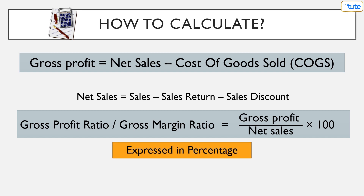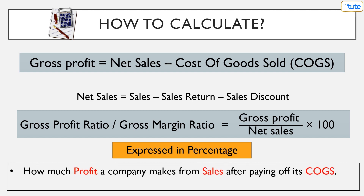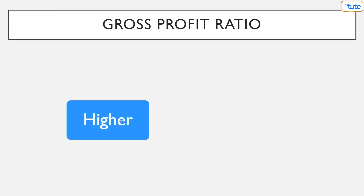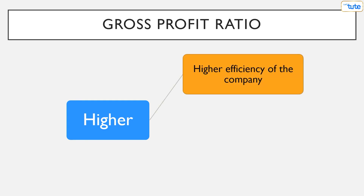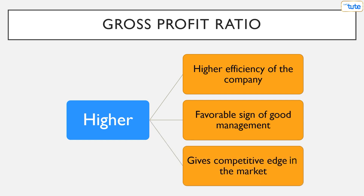The gross profit ratio, expressed as a percentage, indicates how much profit a company makes from its sales after paying off its cost of goods sold. This gross margin depends upon the relationship between sale price, volume and cost. A higher ratio is better as it shows higher efficiency of the company and is a favorable sign of good management. It also gives a competitive edge in the market.